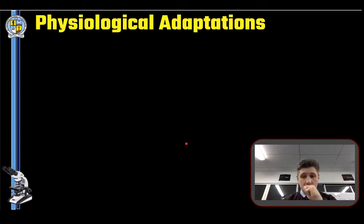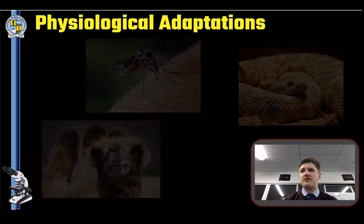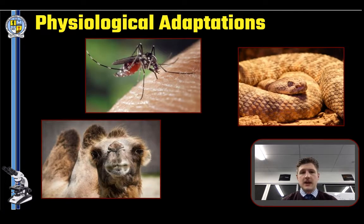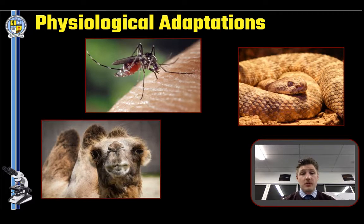Now for physiological adaptations — these are the hardest to work out because unless you know the inner workings of an organism it can be quite tough. The definition of a physiological adaptation is that they are the internal systems or processes in an animal's body that respond to physical threats from the environment or its predators.